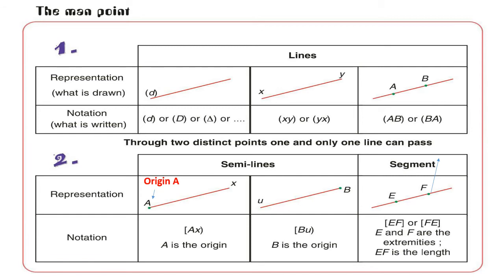What's about the notation? I will start by opening a bracket. A bracket represents the limited point. My limited point is A, so I open the bracket toward A: bracket, A, X, then parenthesis — because X is unlimited. The semi-line has two extremities: the first one is limited, while the second one is unlimited. The limited extremity is called the origin.